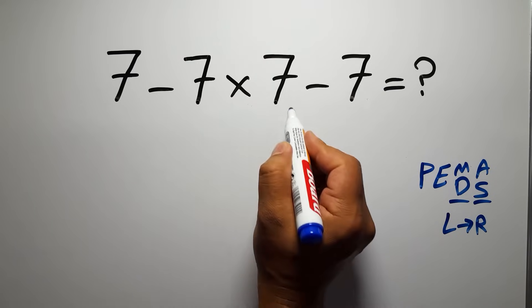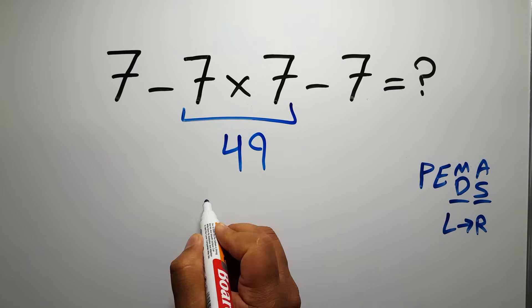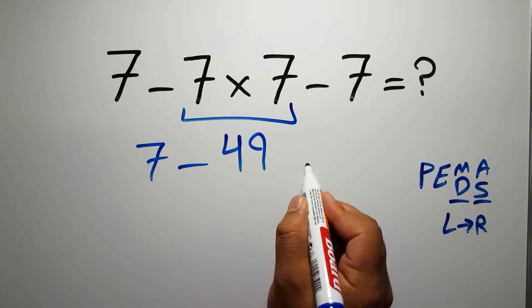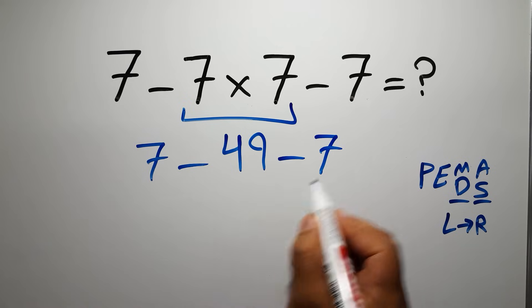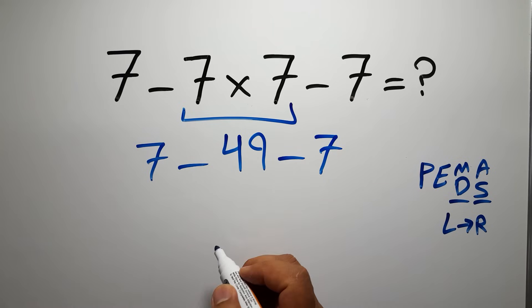7 times 7 gives us 49, and 7 minus 49 minus 7. Now we have two subtractions and we have to work from left to right.